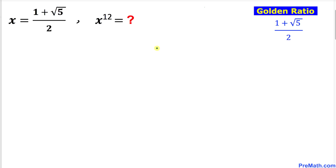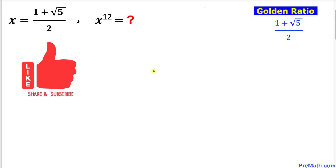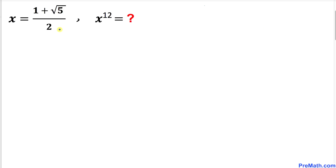Welcome to Pre-Math. In this video tutorial we are going to find the value of x to the power 12, if x equals 1 plus square root of 5, divided by 2. This ratio — 1 plus square root of 5 divided by 2 — is called the golden ratio. Please don't forget to give a thumbs up to this video, so let's go ahead and get started with the solution.